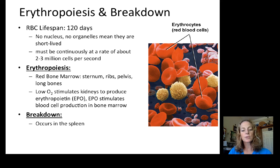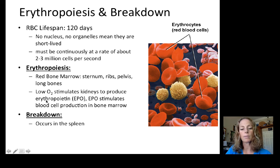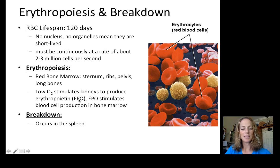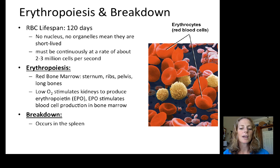The process of forming new red blood cells is called erythropoiesis, occurring in the red bone marrow. In adults, red bone marrow is primarily in the sternum, ribs, pelvis, and long bones. This is stimulated in part by low oxygen, which causes the kidneys to produce a hormone called EPO, or erythropoietin — the substance Lance Armstrong was busted for using as a blood doping agent.